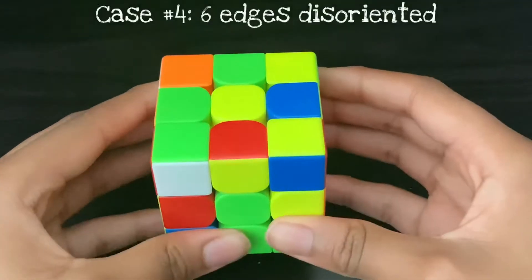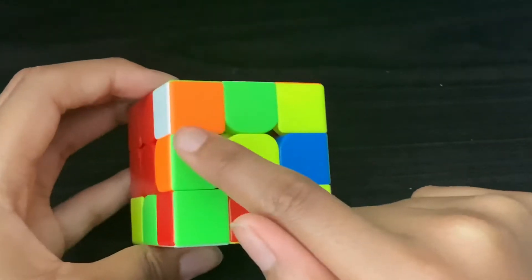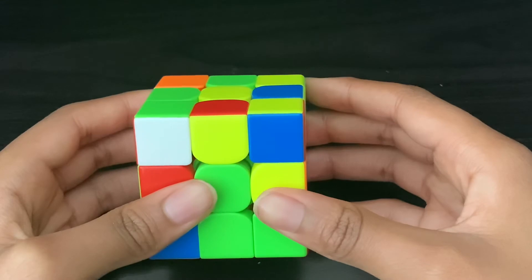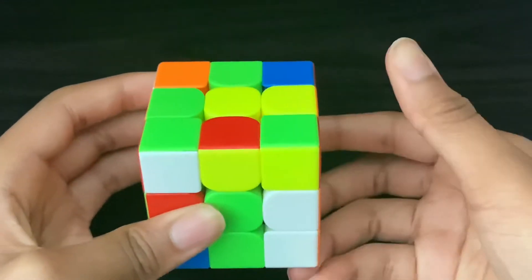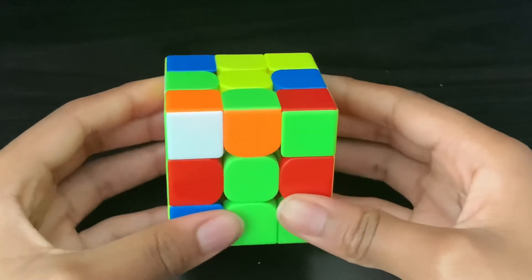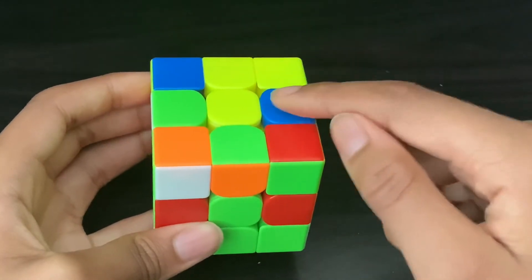The fourth and final case is when you have six bad edges. How you orient all the edges is first you swap the UF edge with a middle edge. This will set us up into a four bad edges case.